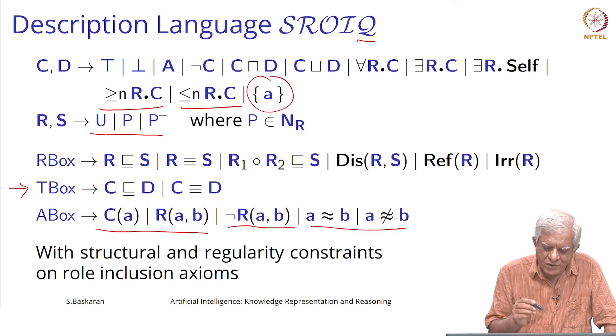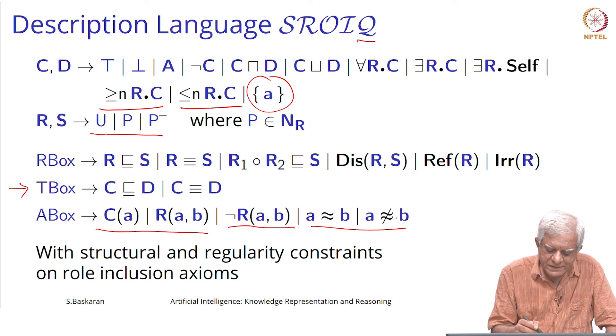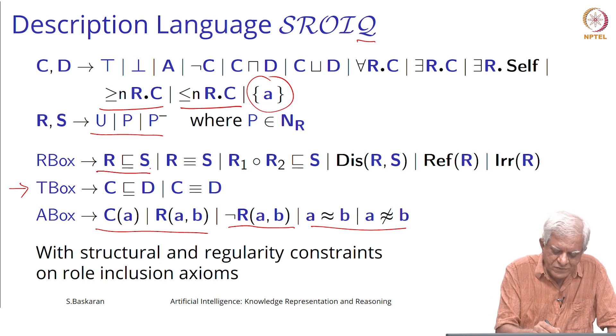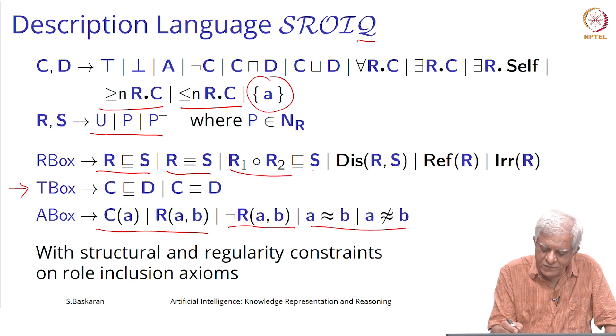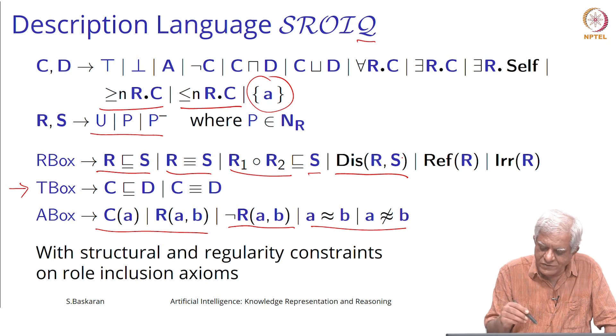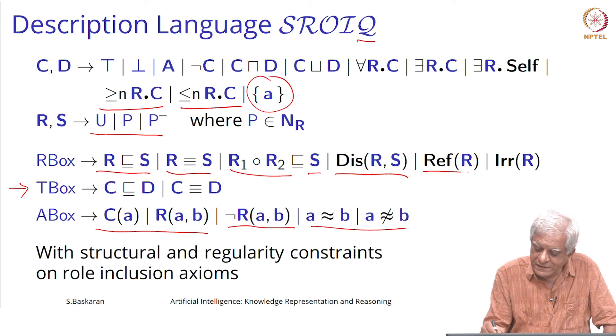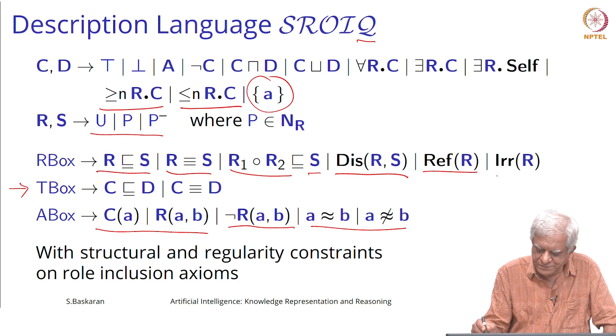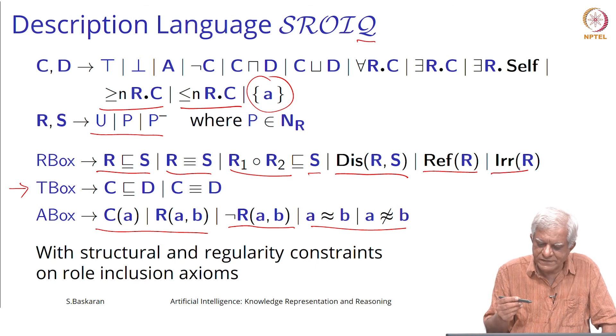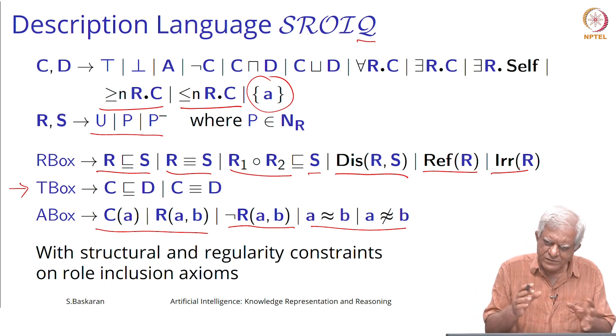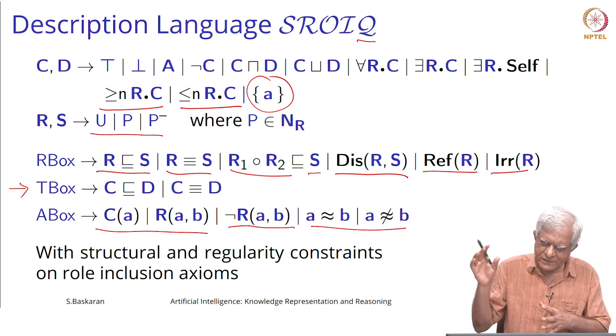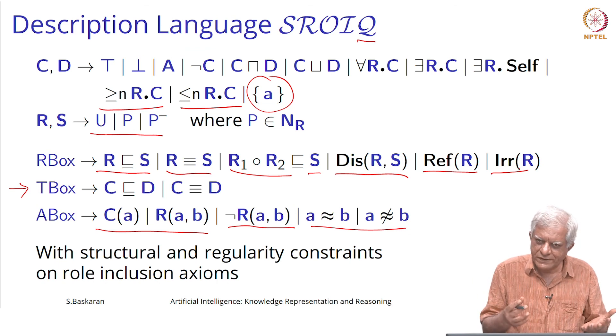In the R-box we can talk about relations between roles. One role is subsumed by R, is subsumed by S, or R is equivalent to S, or you can compose R1 R2 and that is subsumed by S, or R and S are disjoint rules, or R is a reflexive rule or R is a reflexive rule. As we move further in this hierarchy of languages, we can express more and more things.